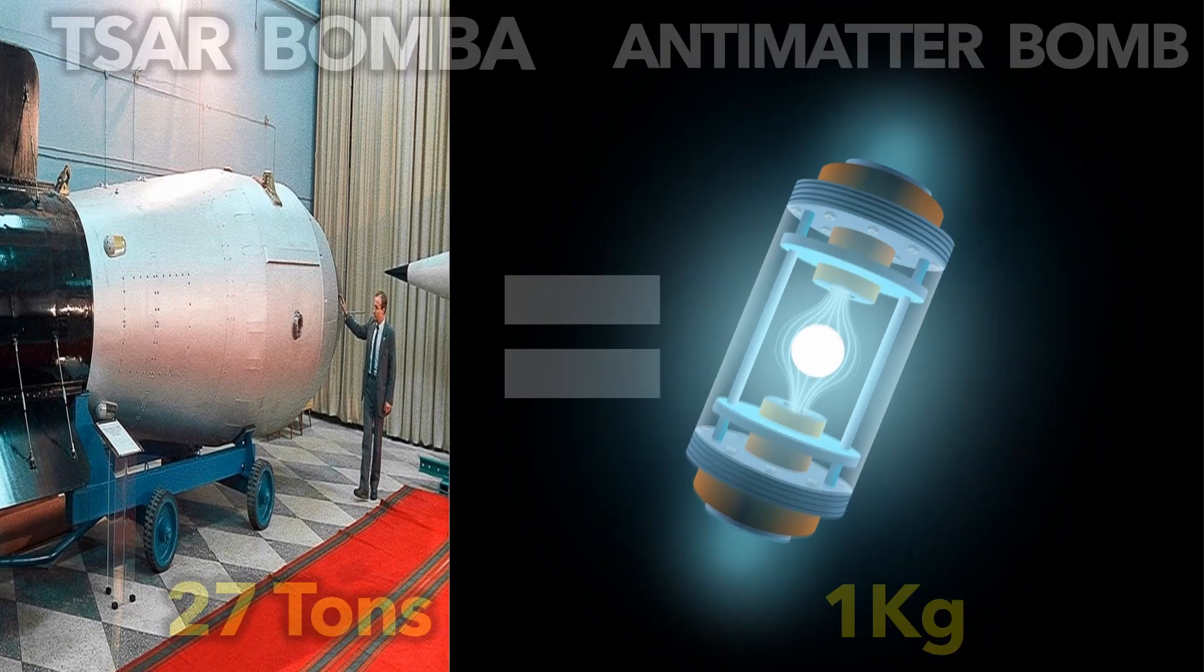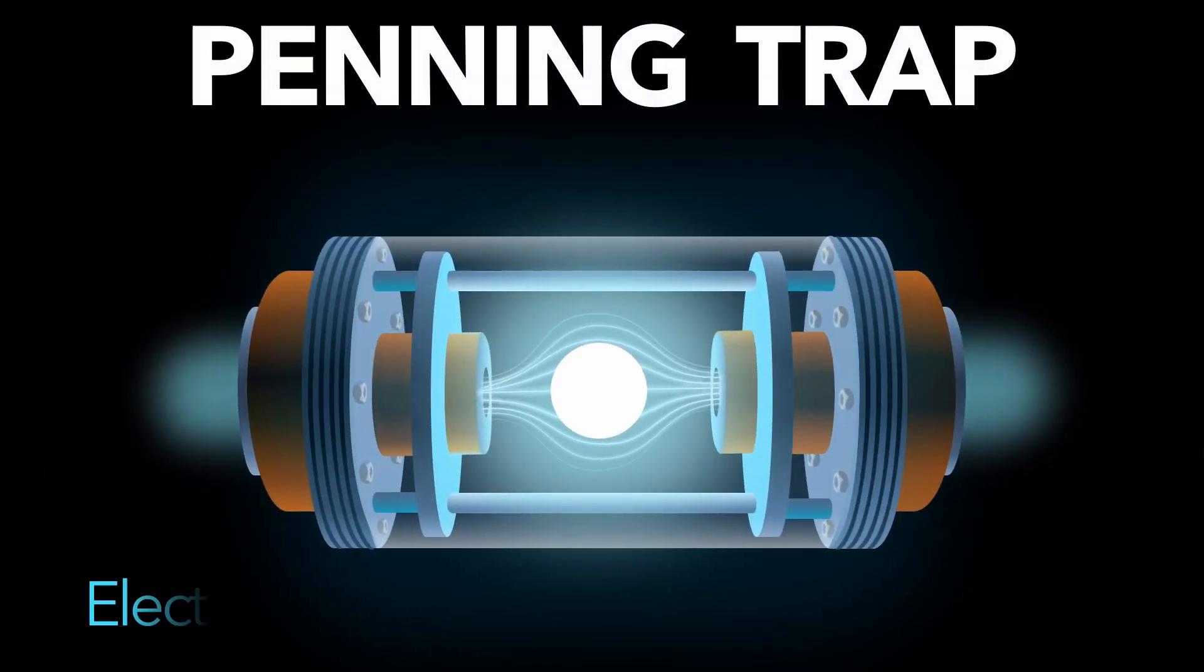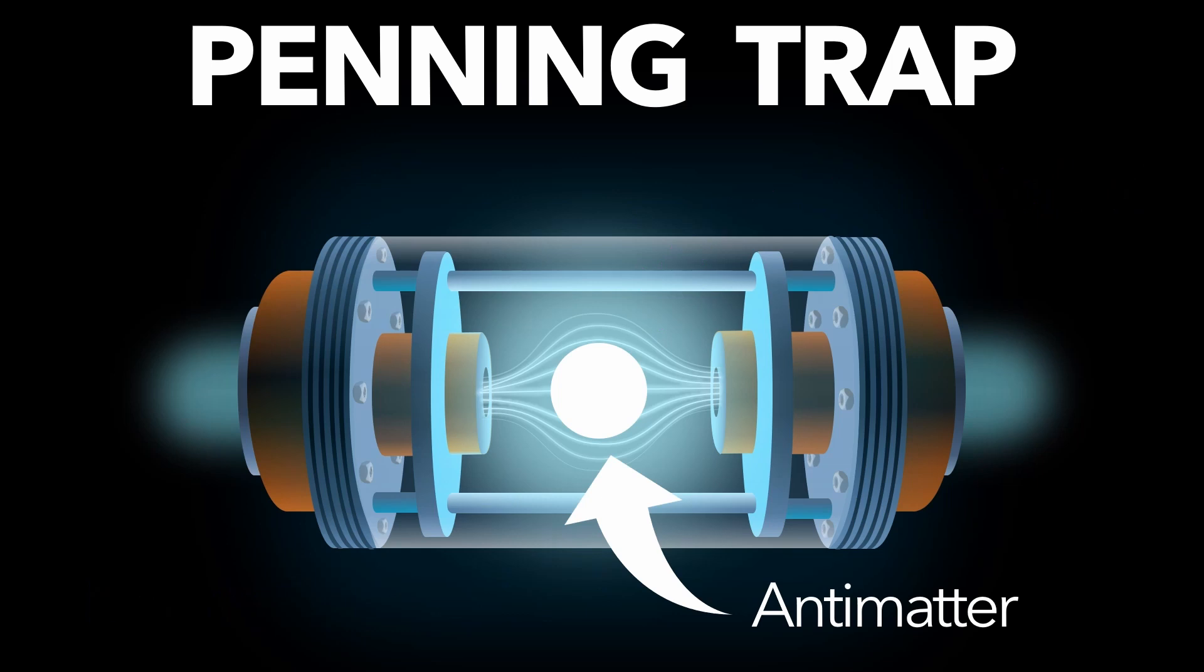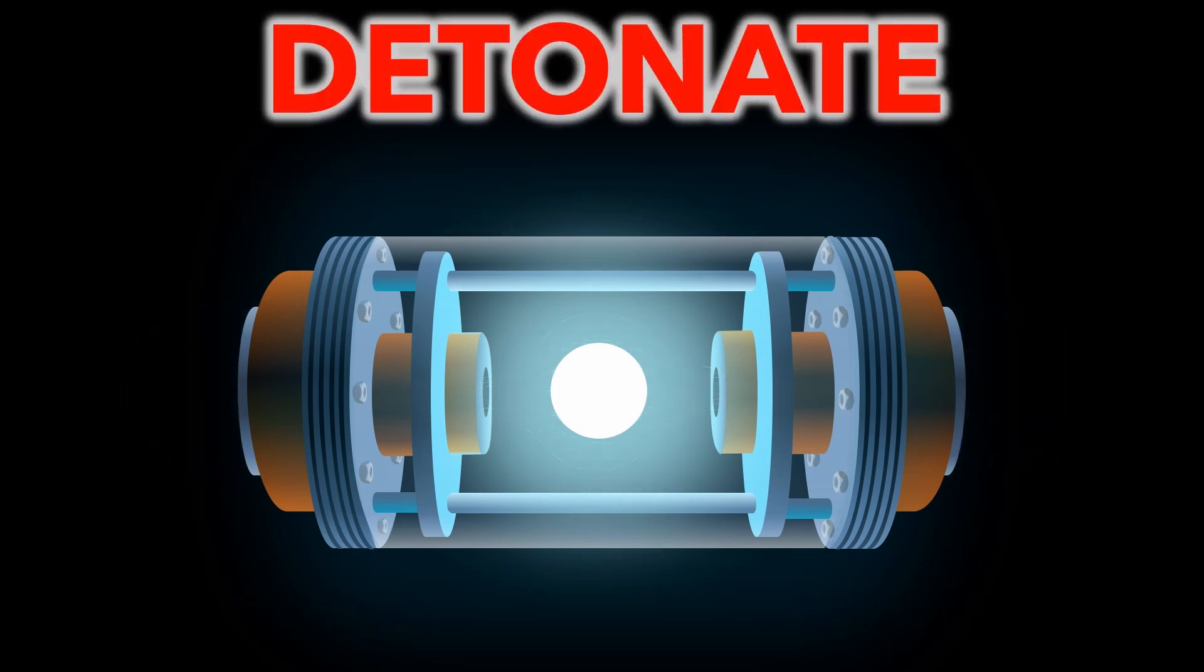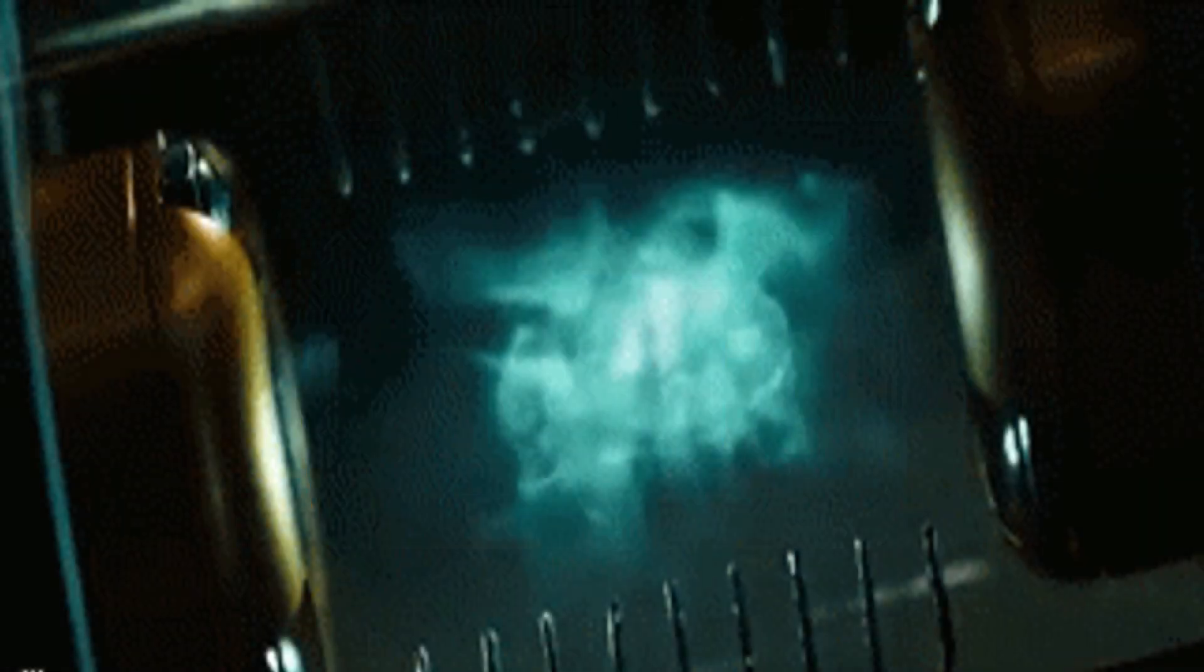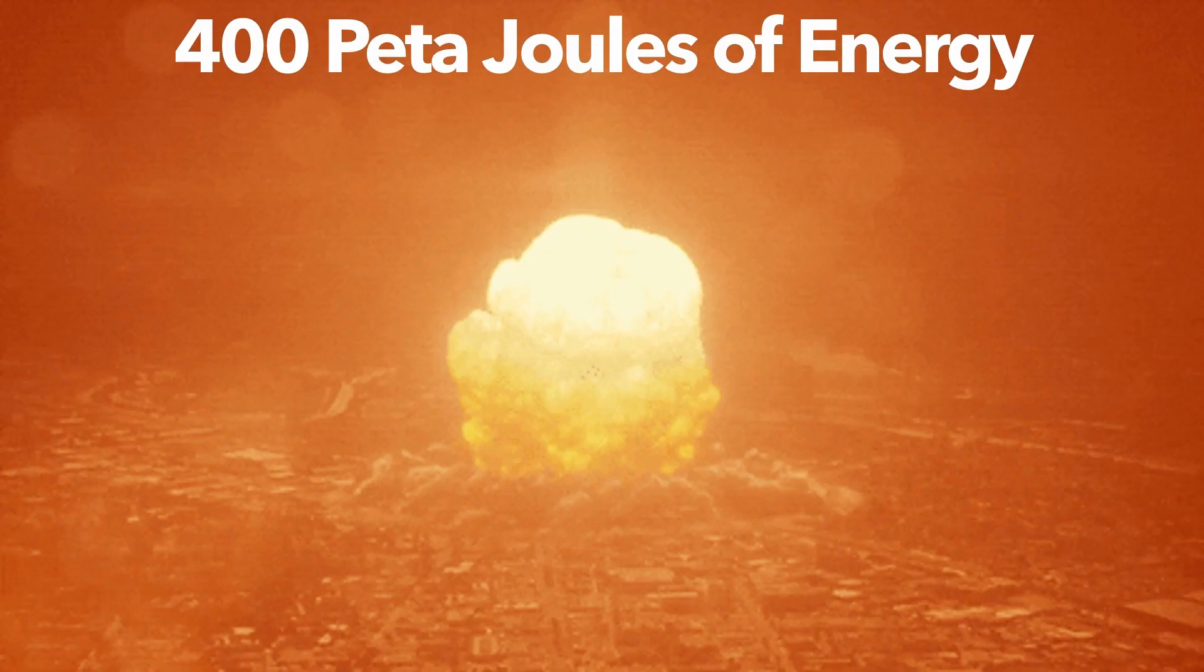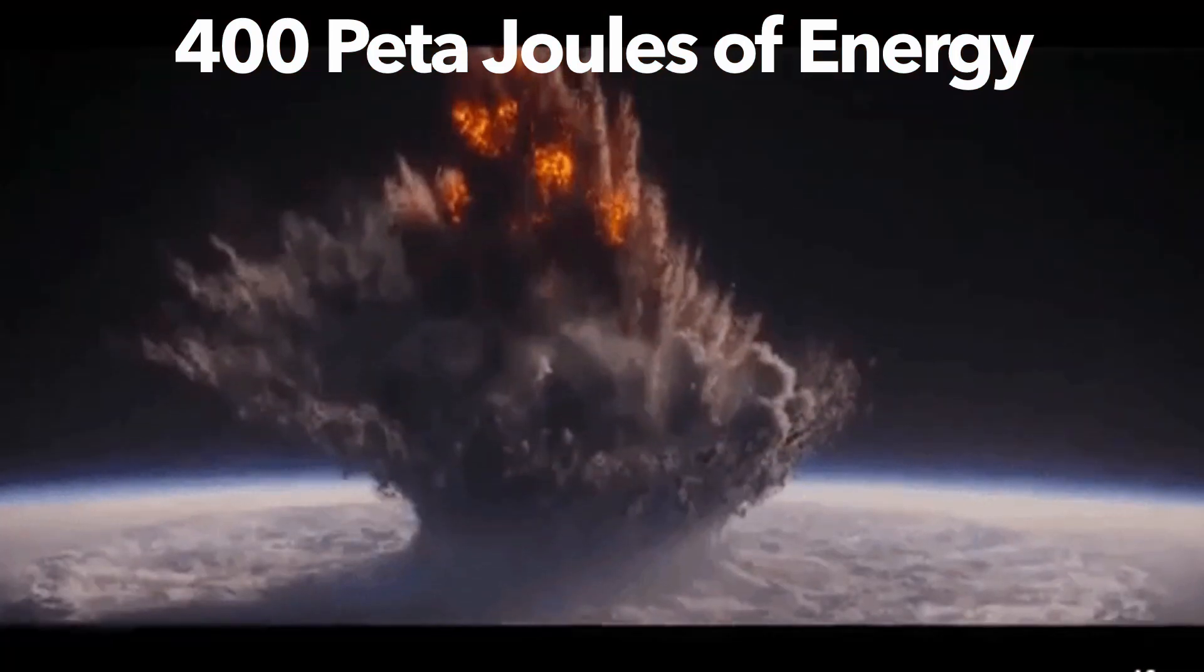The antimatter would be stored in a penning trap, which uses magnetic and electric fields to keep the antimatter from touching the container walls. To detonate the bomb, you simply turn the battery off. The antimatter then touches the container walls, which are made of normal matter, with both turning into pure energy.